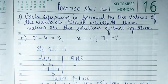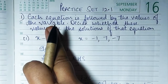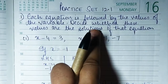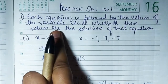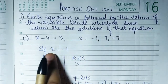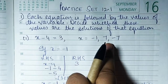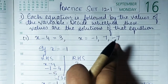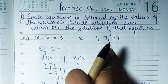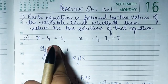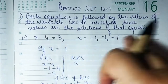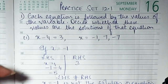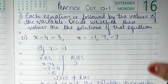Begin with practice 12.1. Each equation is followed by the values of the variable — we have to decide whether these values are the solution of that equation. I have solved the first part and will explain it, then do the remaining two.